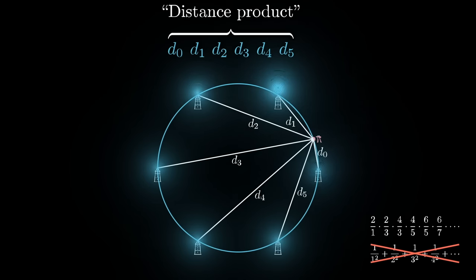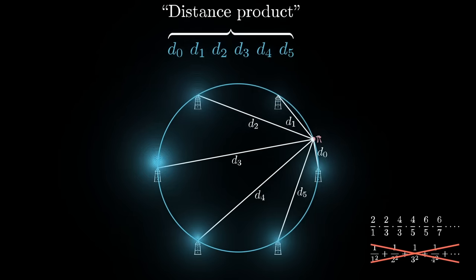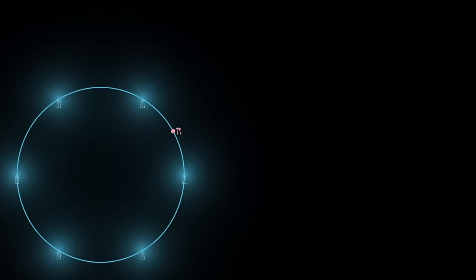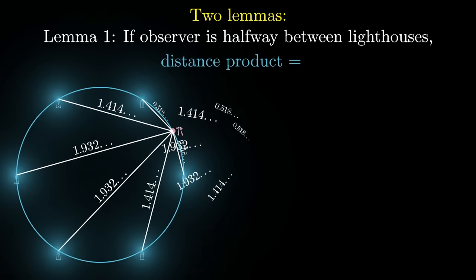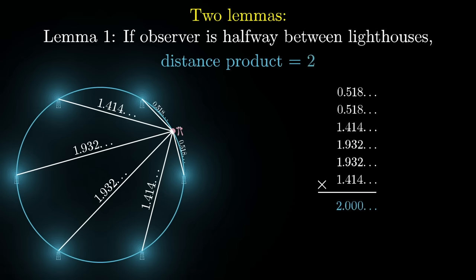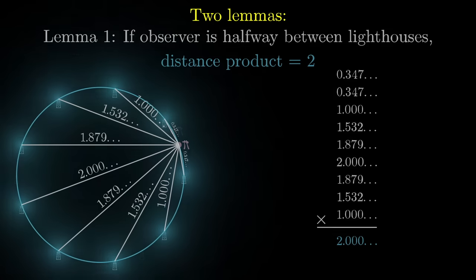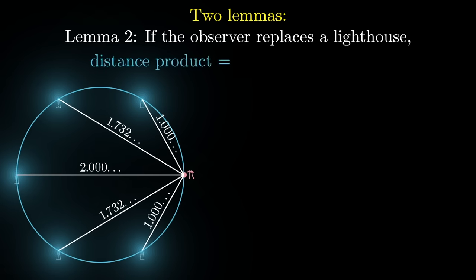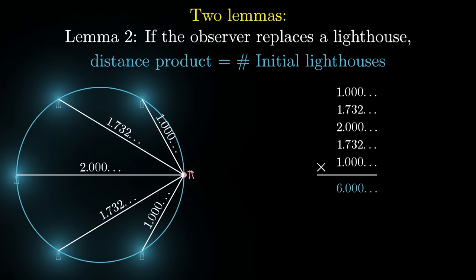For this proof of the Wallis product, we're going to need two key facts about this distance product — two little lemmas. First, if the observer is positioned halfway between two lighthouses on the circle, the distance product works out to be exactly two, no matter how many lighthouses there are. And second, if you remove one of those lighthouses and put the observer in its place, the distance product from all of the remaining lighthouses happens to equal the number of lighthouses you started with — again, no matter how many lighthouses there are.